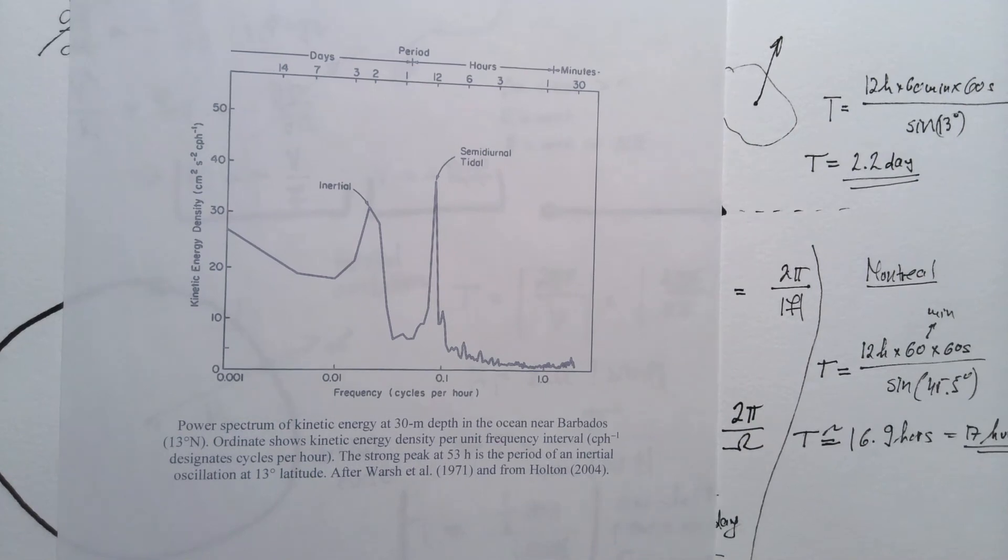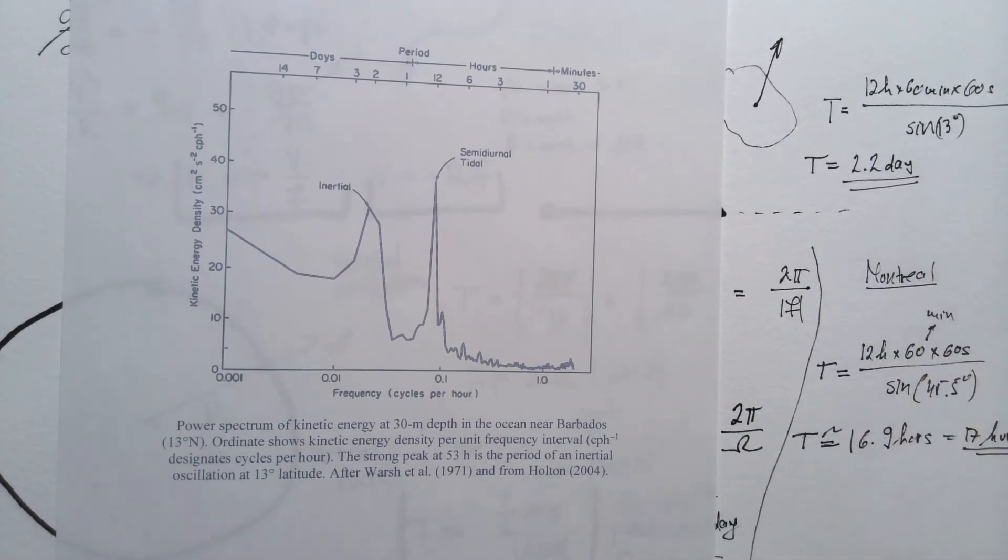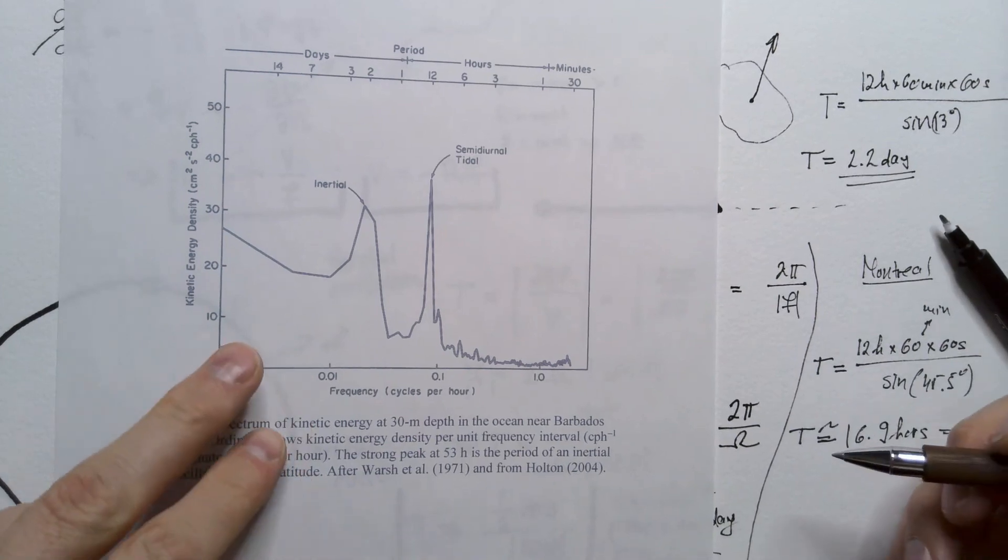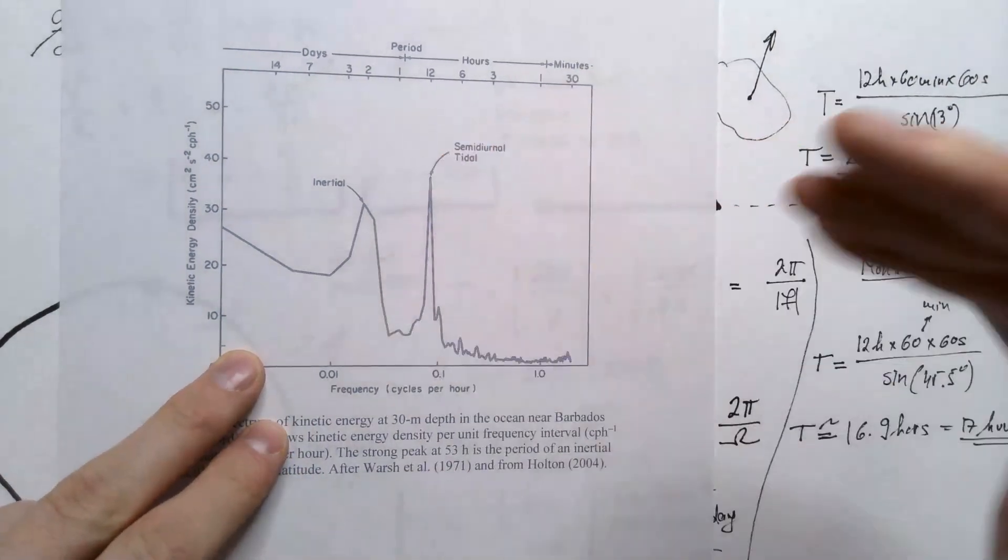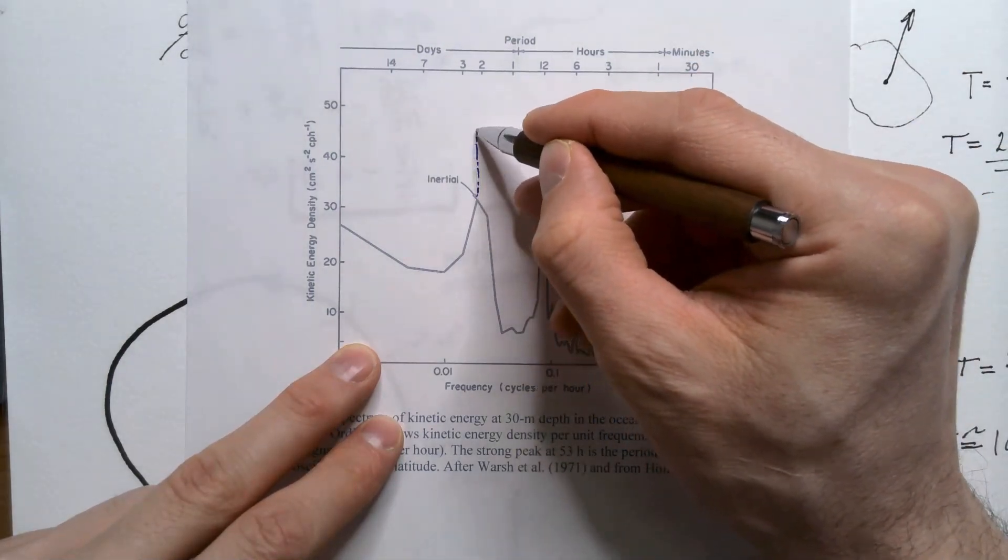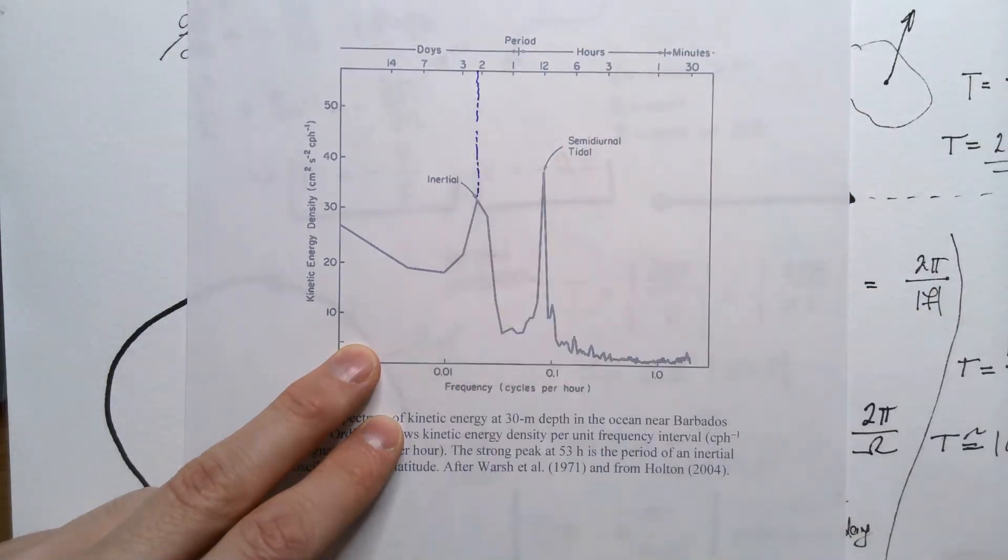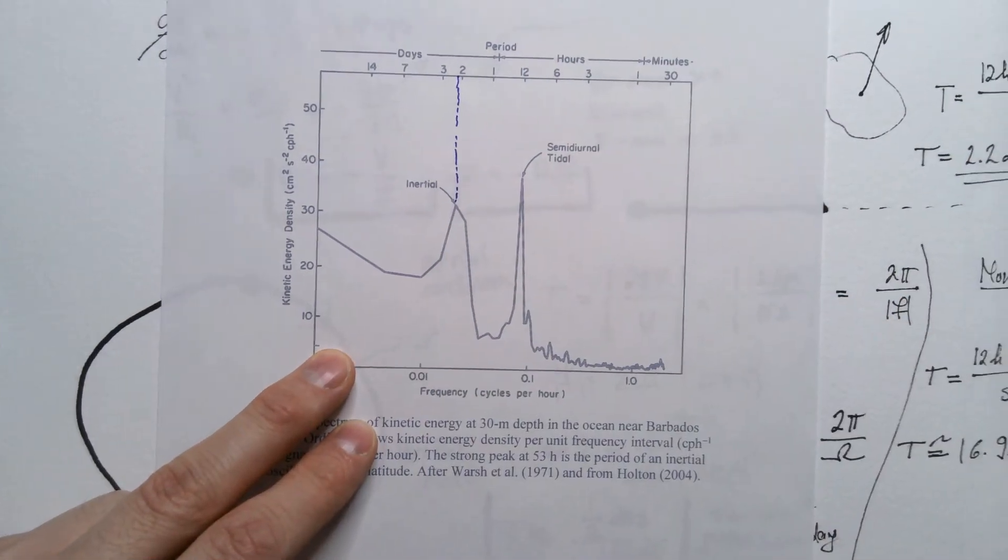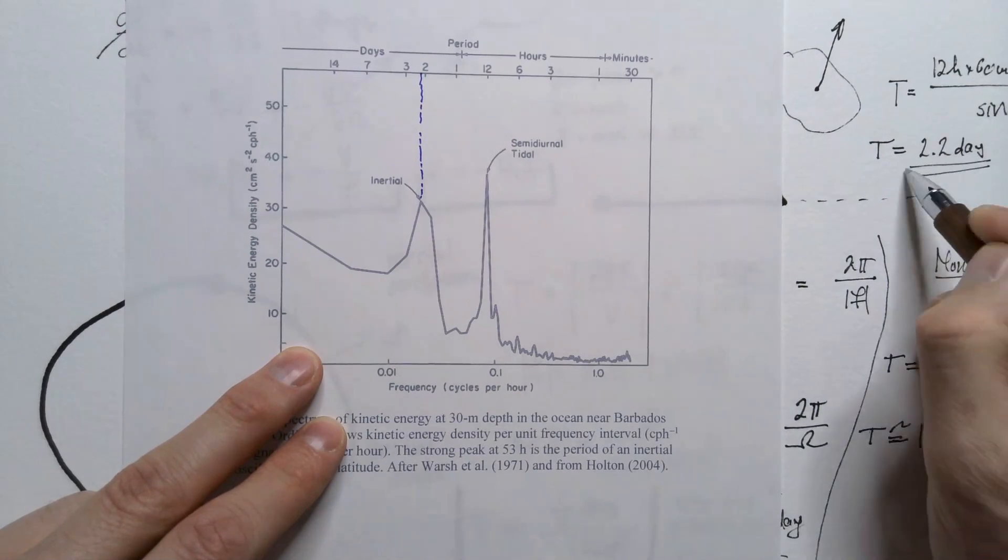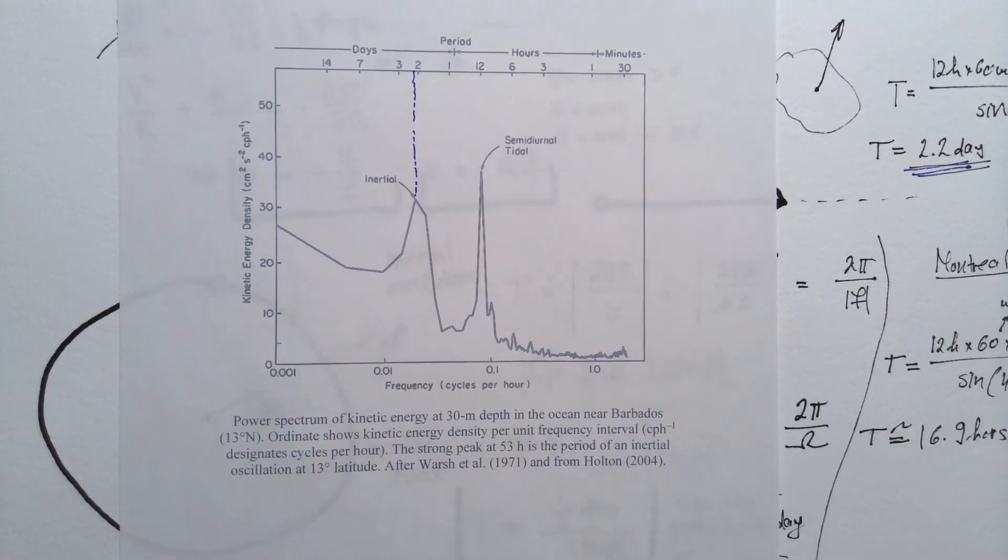So, that's the period of inertial oscillations at this latitude. And now, if we go back to this figure, you will notice that this peak has period of 2.2 days. Conclusion, atmospheric science and physics are awesome.